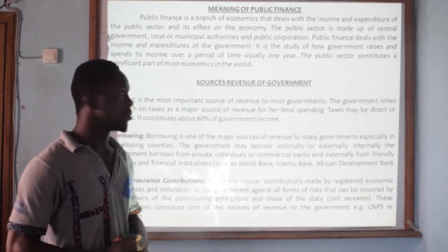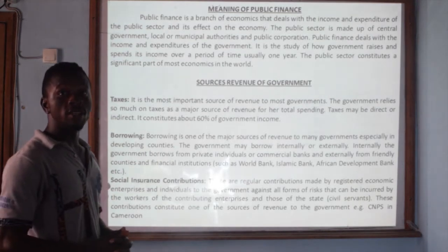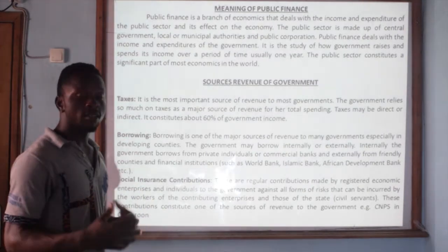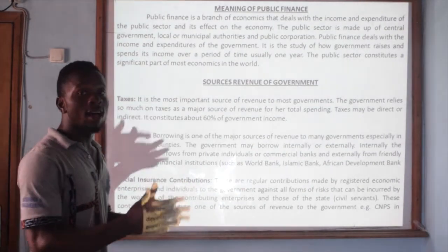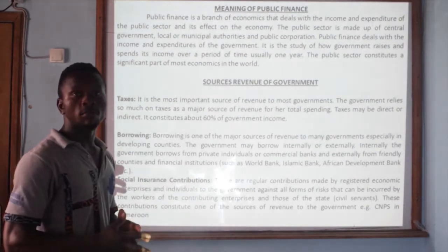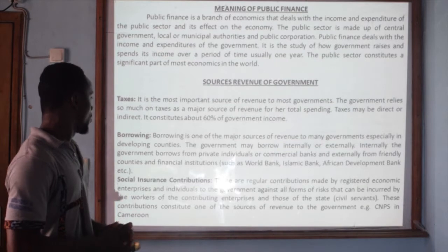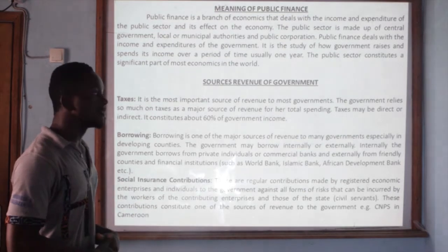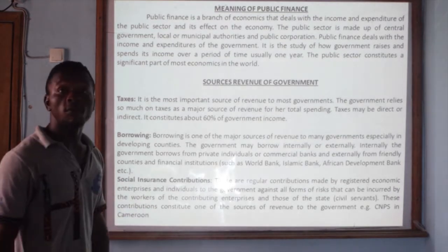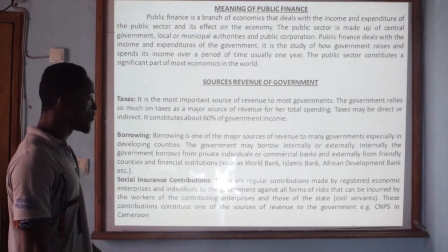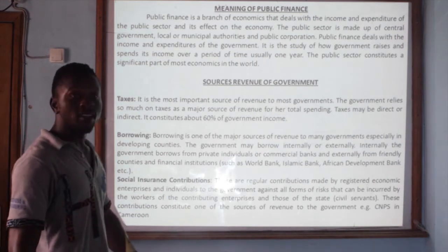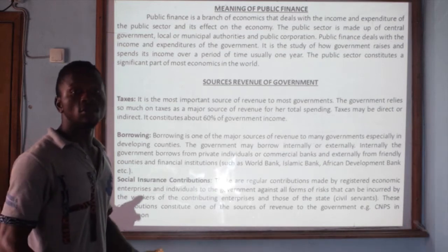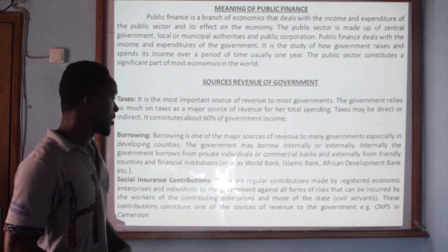Secondly, we will be talking about borrowing. The government also raises its income from borrowing. This borrowing can be divided into two sectors: internal and external. Internally, the government can borrow from private sectors, private individuals, or financial institutions like commercial banks. Externally, it can borrow from friendly countries or international financial institutions such as the World Bank, Islamic Bank, and the African Development Bank.